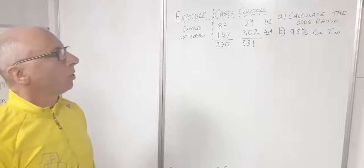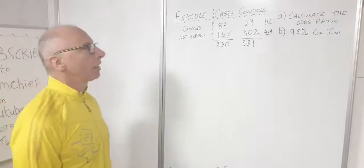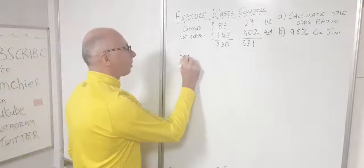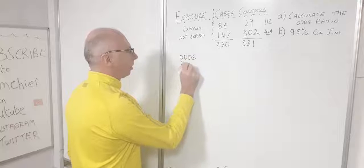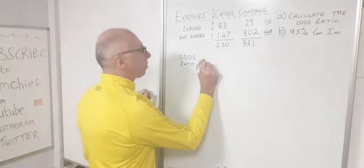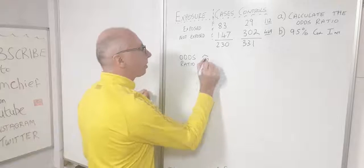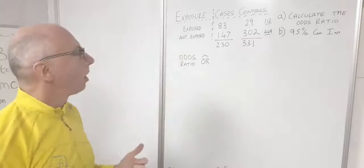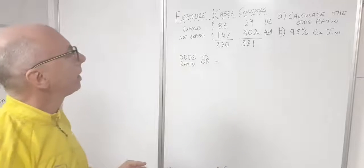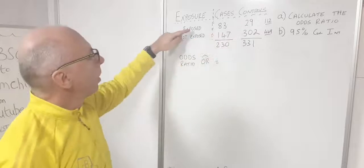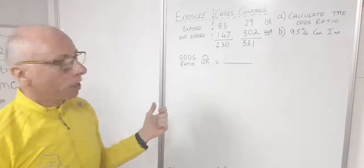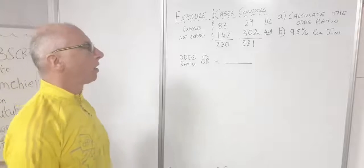Let's calculate the odds ratio. My notation for today will be OR-hat. The way we calculate it is using our contingency table — it's called a ratio, so a fraction is going to be part of our calculations.